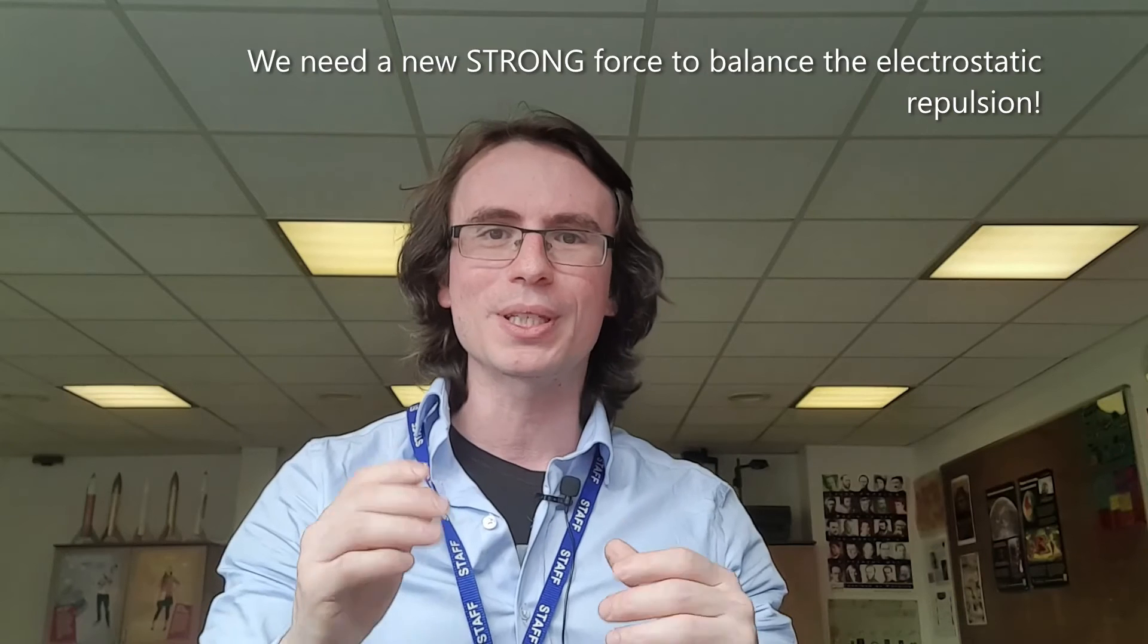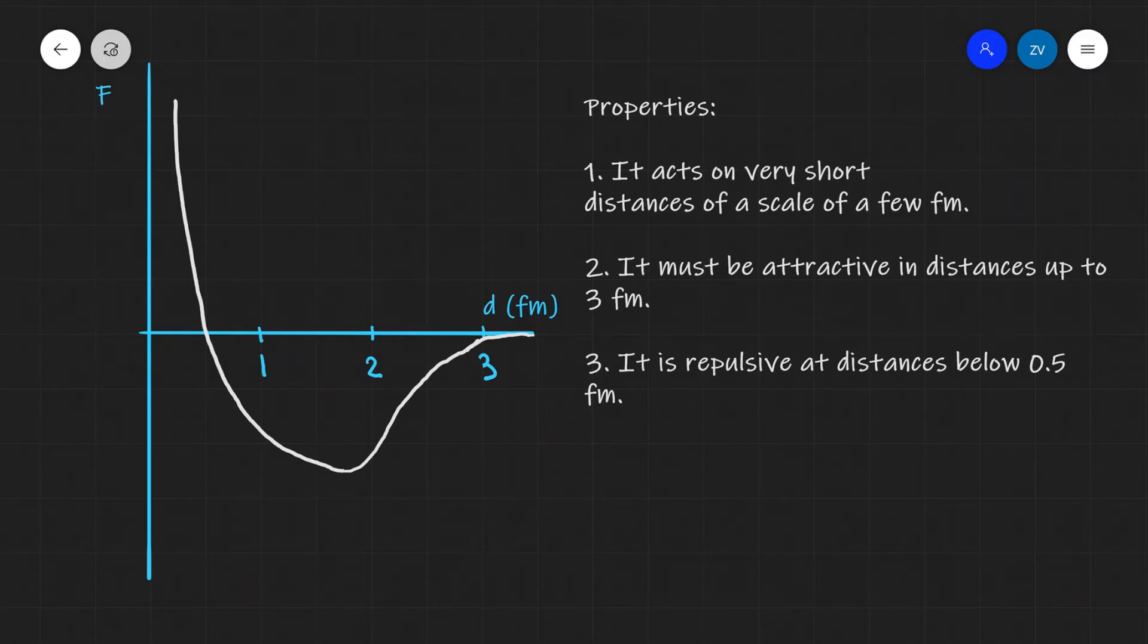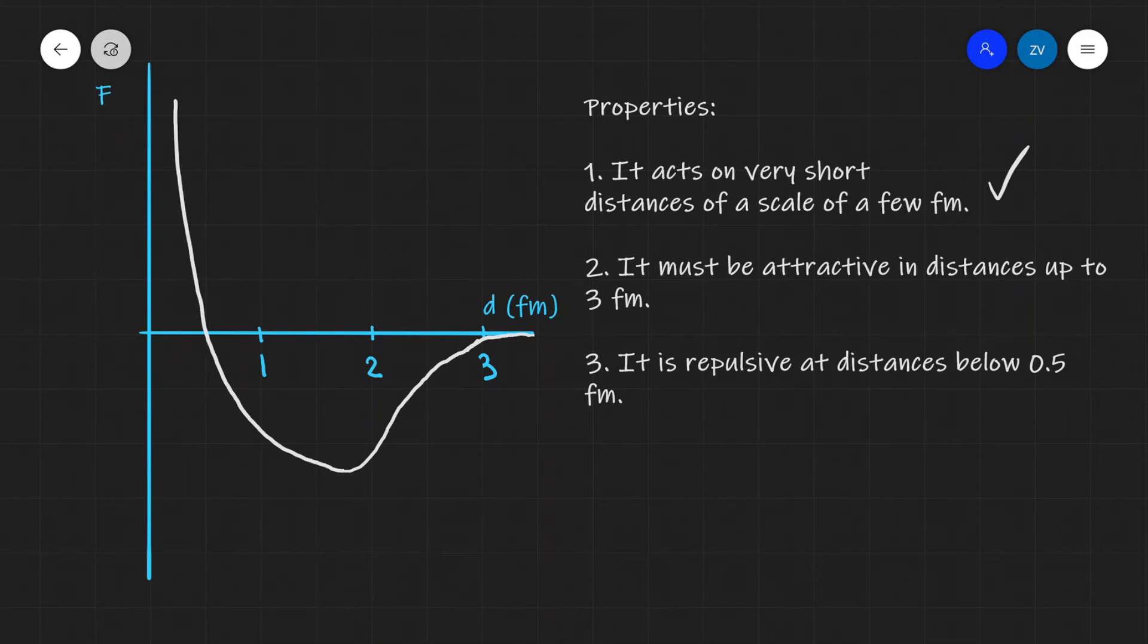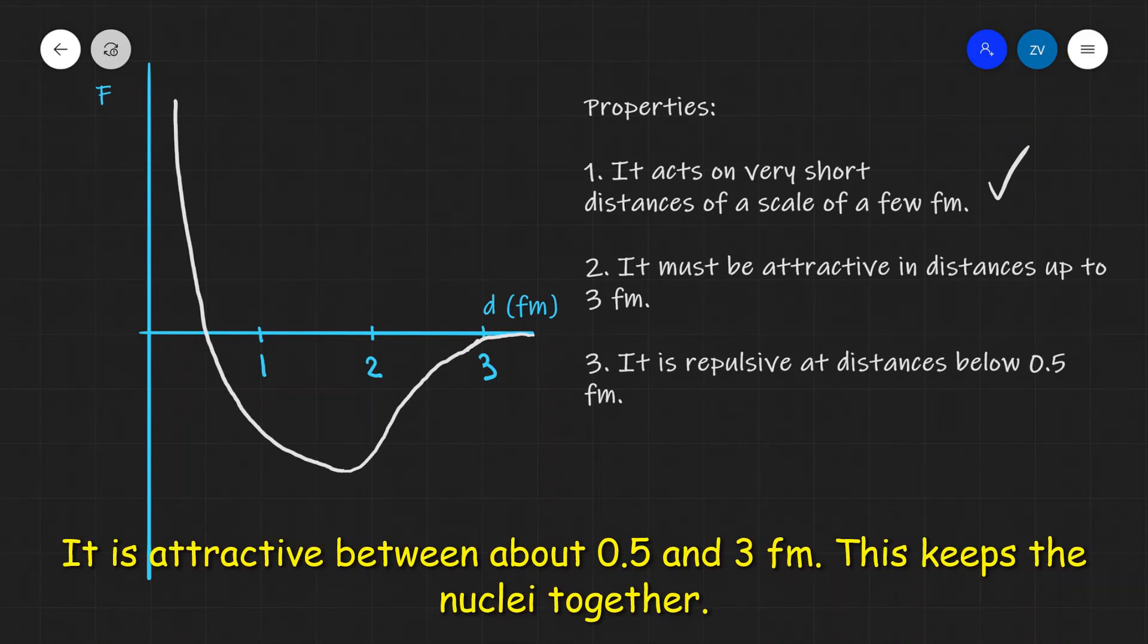Let's have a look at the properties of the strong nuclear force. Number one is that it must act on only very short distances. It is not a force that we really notice in the macro world, in the normal human scale. So, it only acts on some very short distances. It needs to be attractive in distances up to 3 femtometers. Notice how the sign of the force on this graph of force against distance is negative. So, the force is attractive within this region over here.